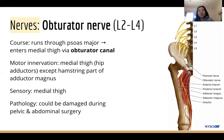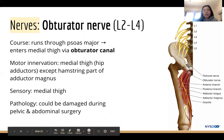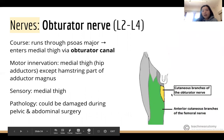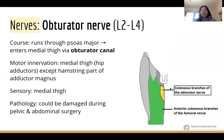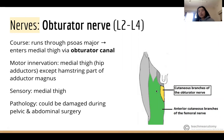The obturator nerve also runs through psoas major. The obturator canal is quite medial, providing a pathway to the medial thigh. It innervates all the medial thigh muscles and also provides some sensory innervation to the medial thigh. Damage can result from any trauma in this area, but most commonly from pelvic and abdominal surgery.